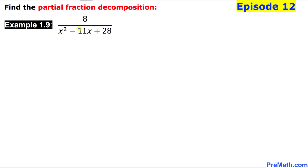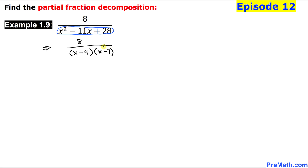Let's focus on the denominator part: x squared minus 11x plus 28, which is a quadratic expression. We can see that we can factor this one out. I can write 8 over, and the possible factoring is going to be x minus 4 times x minus 7. So always make sure that if there is a possibility you can factor them out. We now have two linear factors at the denominator: x minus 4 and x minus 7.